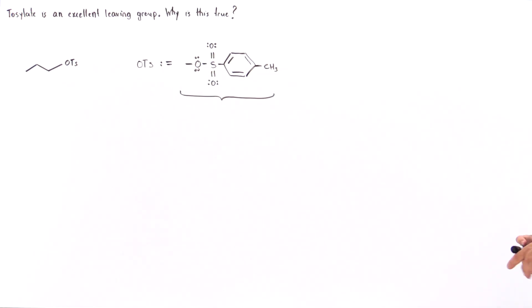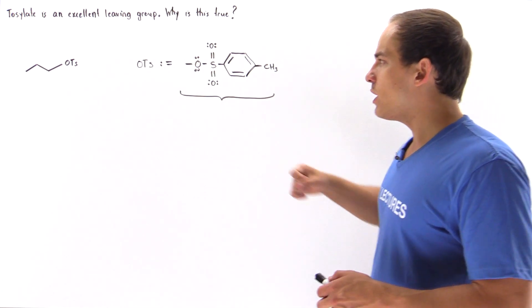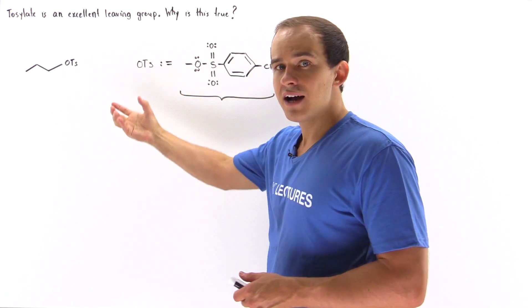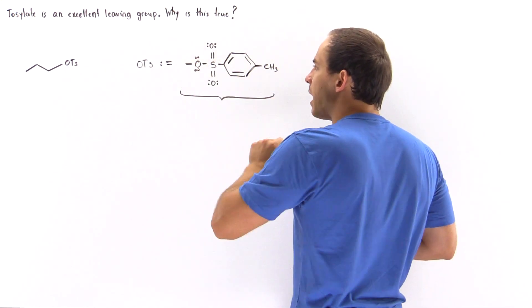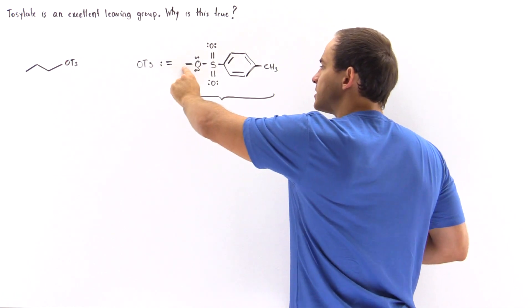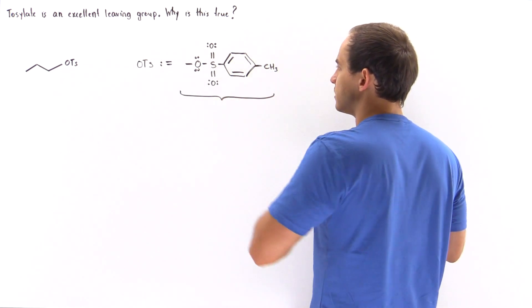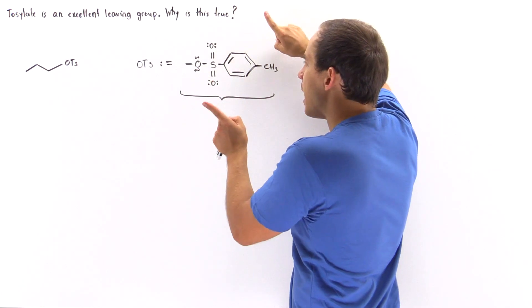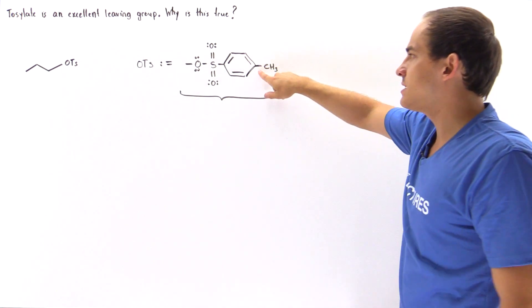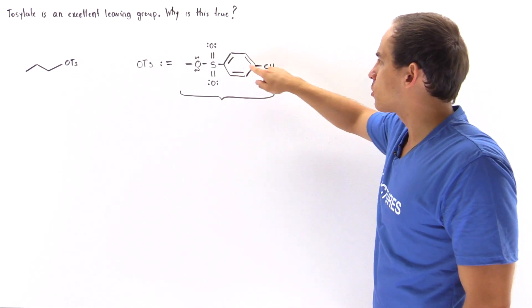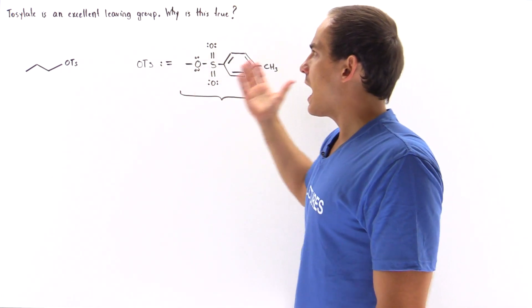Let's begin by examining the structure of the tosylate group. The tosylate group is abbreviated OTs, where O is the oxygen and TS is the entire group. We have an oxygen bonded on both sides — on one side a hydrocarbon, on the other the tosylate portion: a sulfur double-bonded to two oxygens, bonded to a benzene ring with a methyl group at the fourth position.